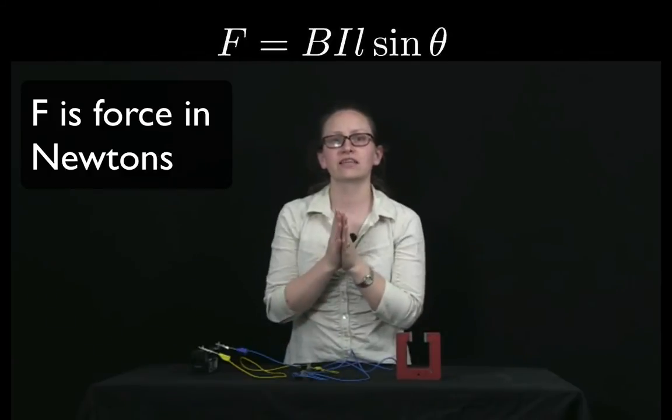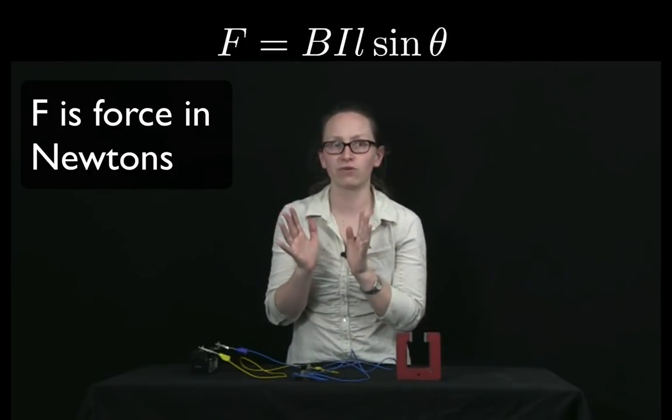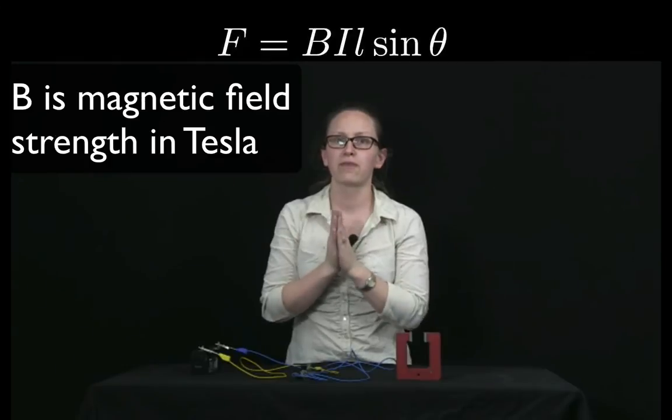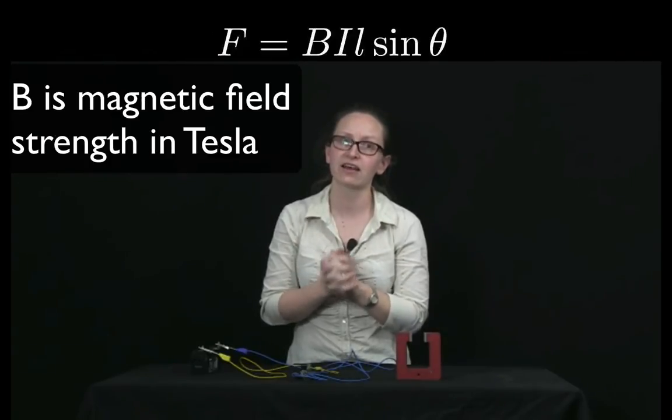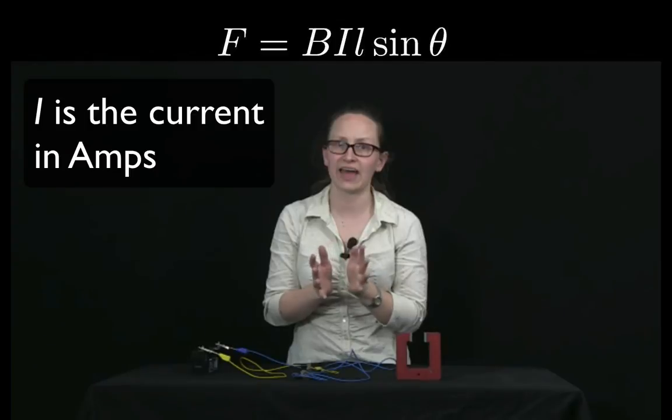So in this equation, F is the force in newtons. B is the magnetic field strength in teslas. I is the current in amps.